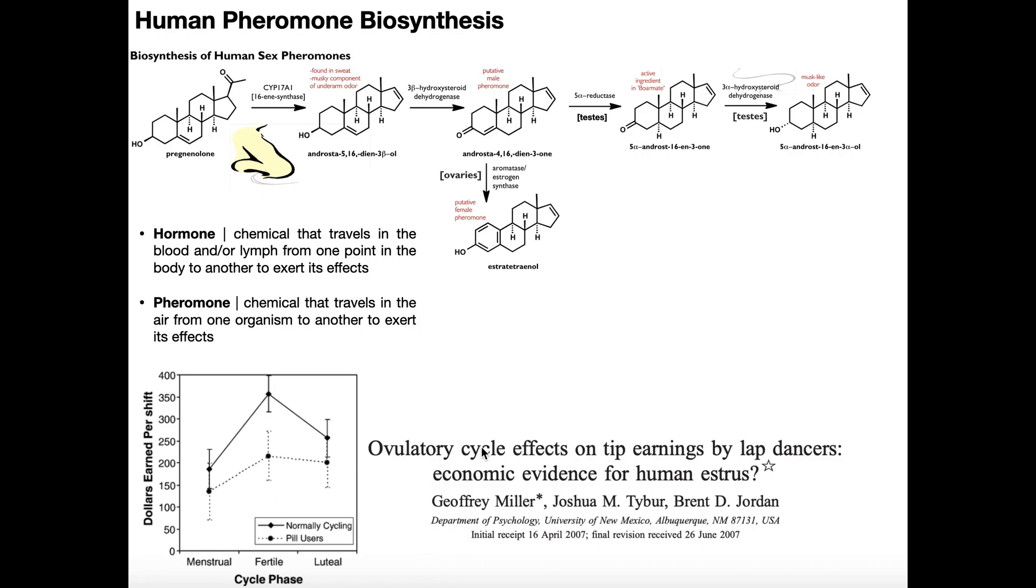Ovulatory cycle effects on tip earnings by lap dancers: economic evidence for human estrus. This study is sometimes referred to as the stripper study. And I remember first hearing about this in a psychology class a long time ago. And so I recently looked it up and sure enough, it is real and very convincing.